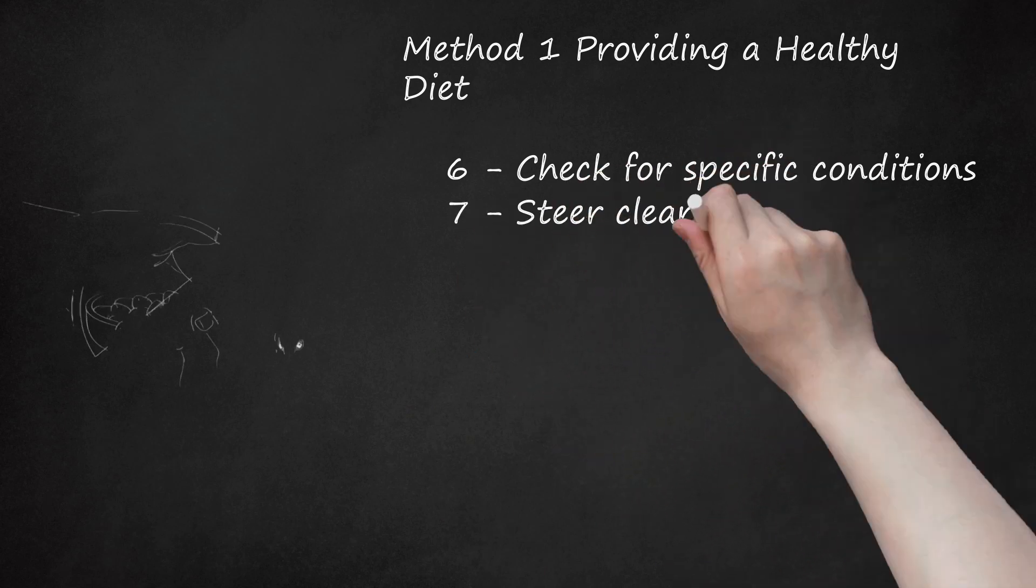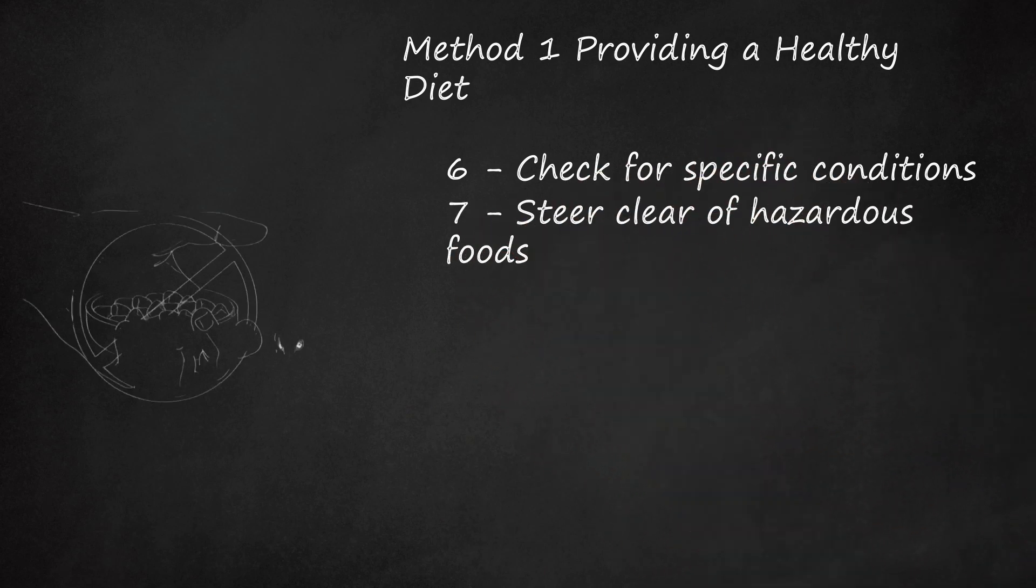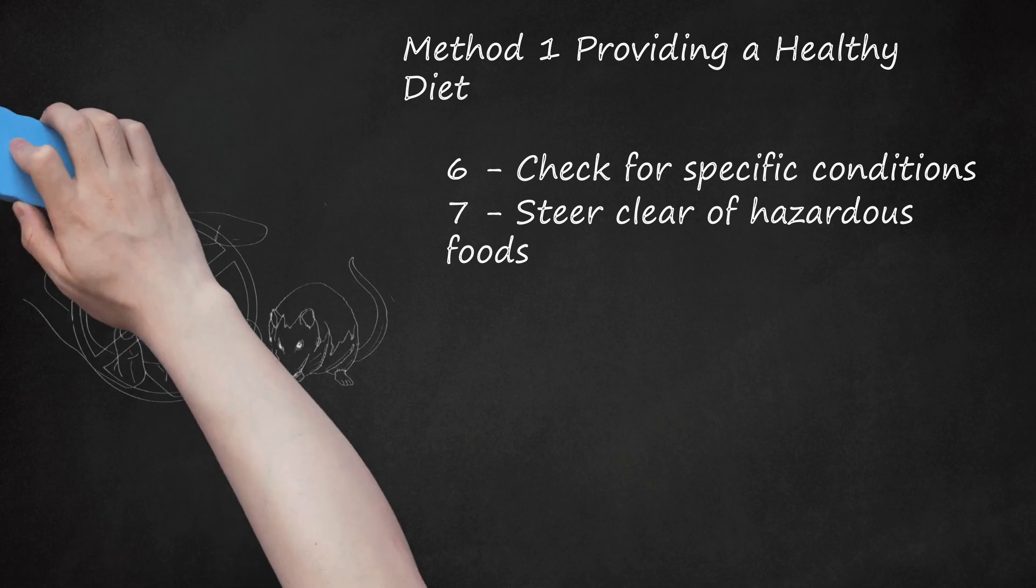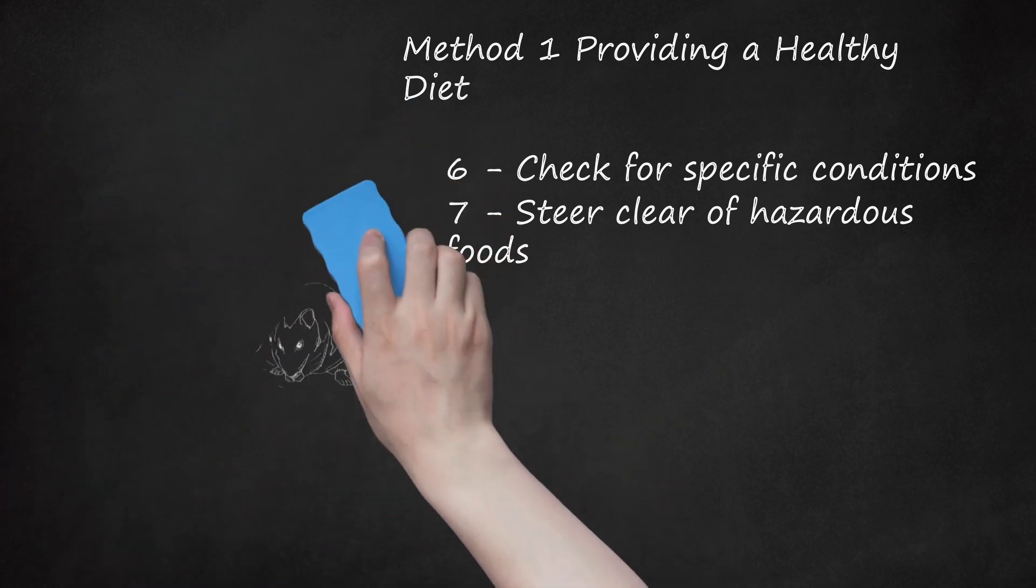Seventh, steer clear of hazardous foods. While rats may enjoy a wide and varied diet similar to your own, there are certain foods that are hazardous to your rat. Dried corn, for example, has high levels of fungal contaminants which have been linked to liver cancer in rats. You'll also want to limit the amount of nitrates in your rat's diet. Nitrates are found in beets, celery, eggplant, lettuce, cucumber, radishes, spinach, collards, and turnip greens. Never give your rat any food that's moldy or spoiled.